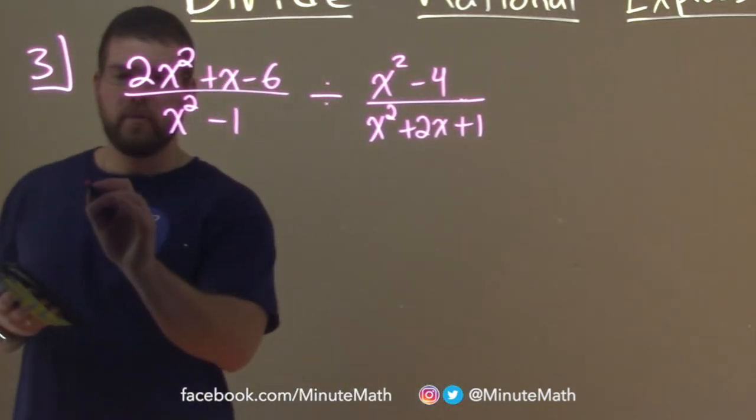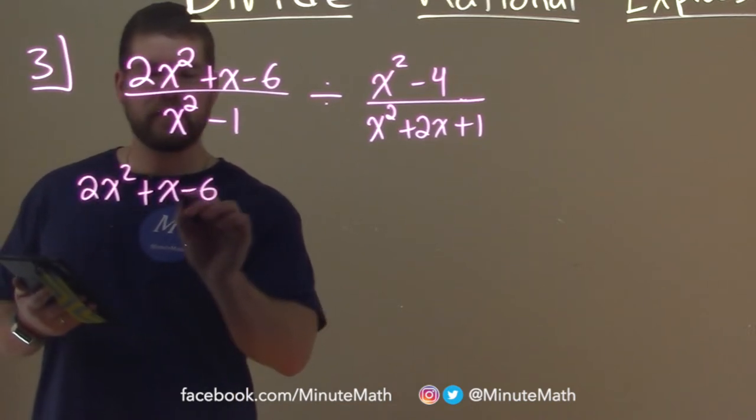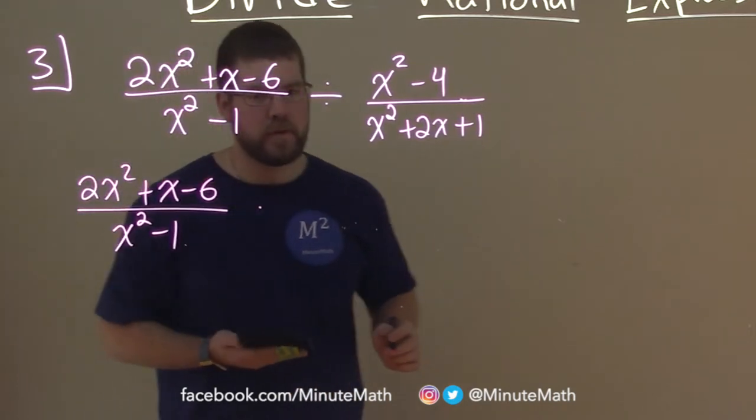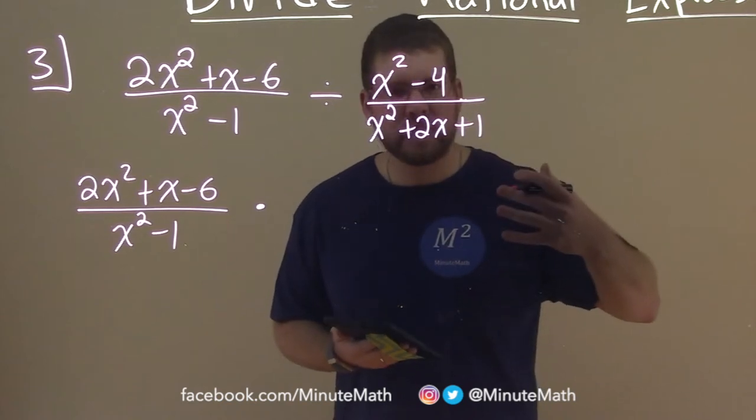So what do I mean? We have 2x squared plus x minus 6 over x squared minus 1, multiplied by... and if we remember in the past,